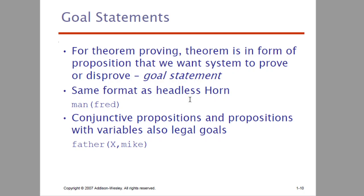Next, we have goal statements. We can use antecedent items and conjunction to form goal statements. We need to go into the theorem of proving — we use goal statements. Basically, the theorem is in the form of a proposition that we want the system to prove or disprove. Some formats will be headless — for example, man of Fred means Fred is a man. A conjunction proposition forms a legal goal statement, such as father of X and Mike.